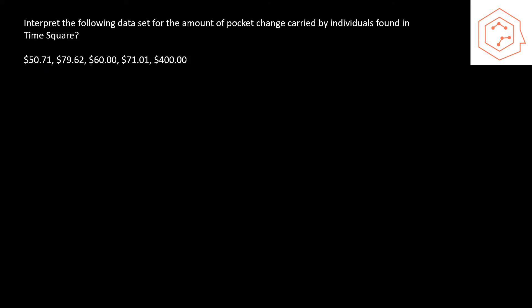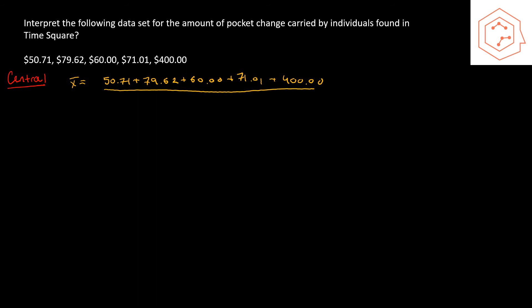Now we have an example using all these values: interpret the data set for the amount of pocket change carried by individuals found in Times Square. Starting with the mean, we sum all points — 50.71 + 79.62 + 60 + 71.01 + 400 — divided by 5, giving a mean of $132.27. Right away something is off: only one point exceeds 100, yet the mean is greater than 100. This is because we have an extremely large outlier of 400, making the data skewed right and the mean unrepresentative.